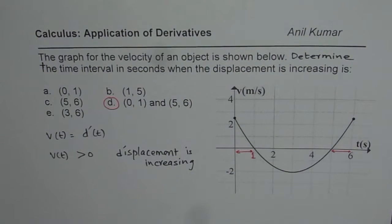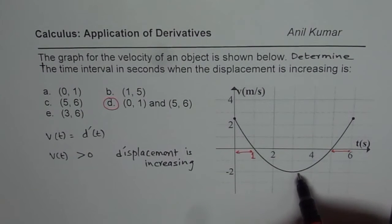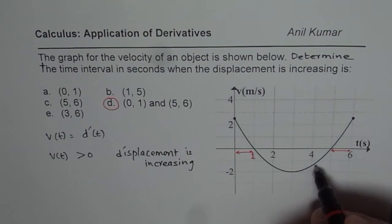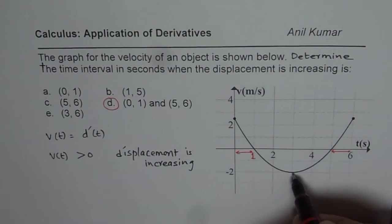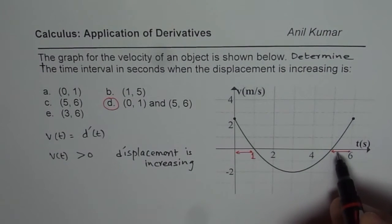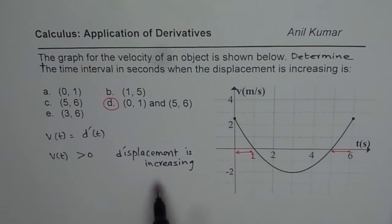I have seen students making mistakes by including, sometimes they see if the velocity is increasing from here to there, so they may write that as an option, or sometimes from 5 to 6, which are both incorrect. So, displacement will be increasing when velocity is positive.